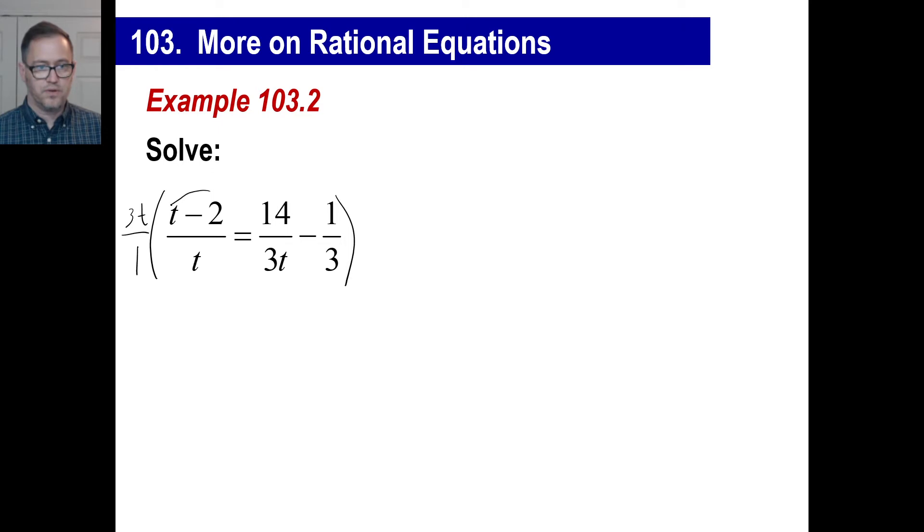Alright. So let's take care of this one first. This would be 3t times this divided by t, which means the t's will cancel. You're just multiplying by 3. So that would be 3 times t minus 2 and counting. Alright. Done. So the same thing here. Let's go 3t divided by 3t. That's just 1, right? So it's just going to be 14. Just going to be 14, nothing else. Alright.